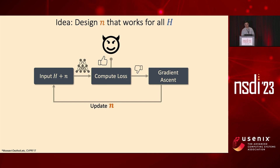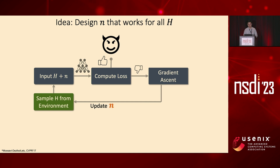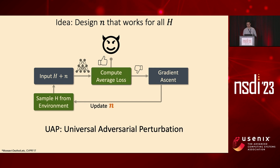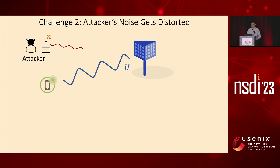Our idea is to design n that works for all possible H in the environment. In the original traditional algorithm, each noise is crafted for a specific H. What we propose is to sample H from the environment at every iteration, because the attacker can collect a dataset by sniffing the surrounding wireless channel in the same environment as the base station. We compute the average loss across all the H we collected. Once we find a good noise, it can be applied to a variety of H values. This is inspired by a previous algorithm called UAP — Universal Adversarial Perturbation.